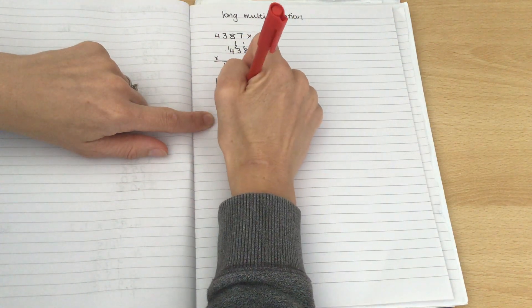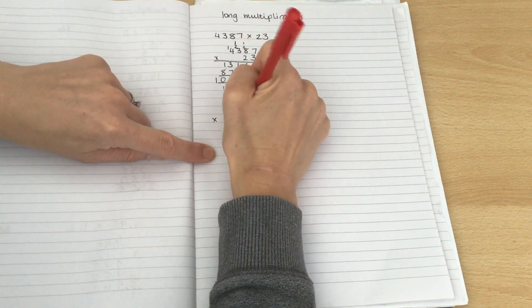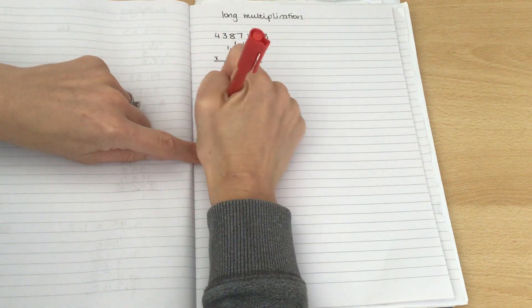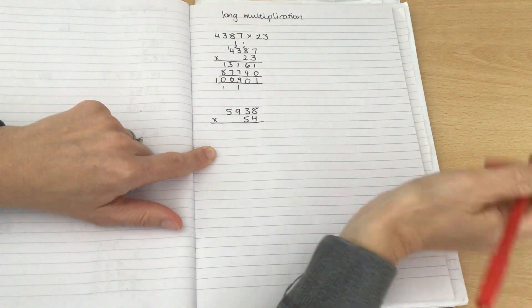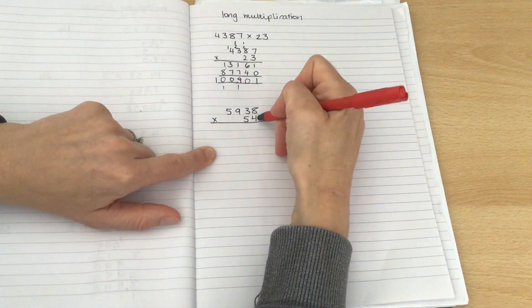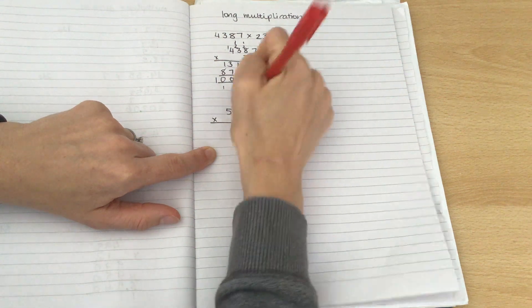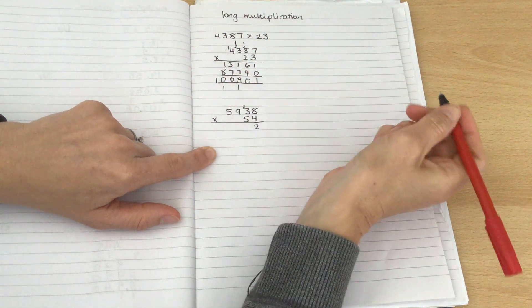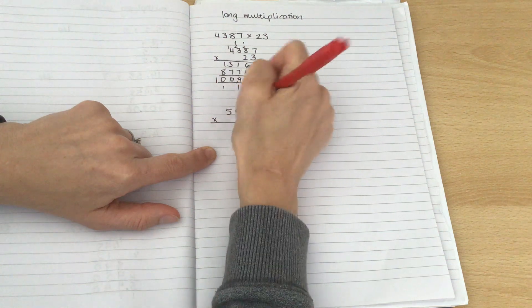Let's try 5,938. Multiply that by 54. And same thing. I didn't write it out above there. So, let's just start with 8 times 4, 32. 3 times 4 is 12. Add the 3 is 15.